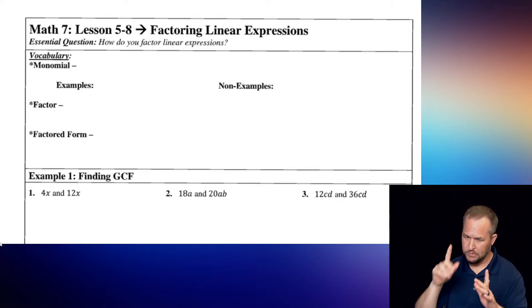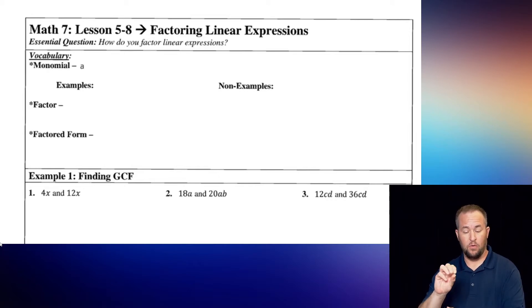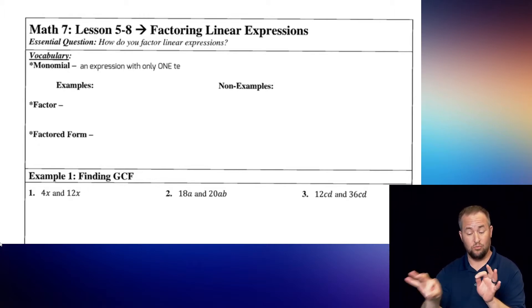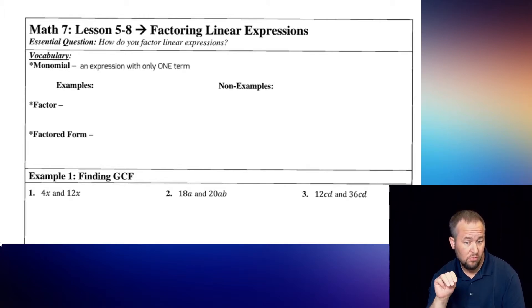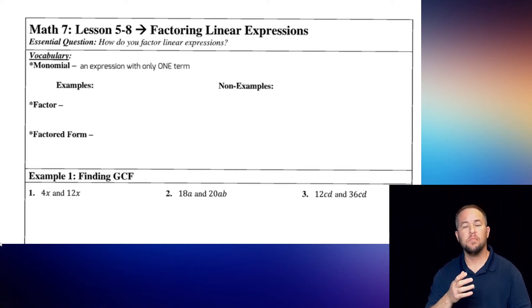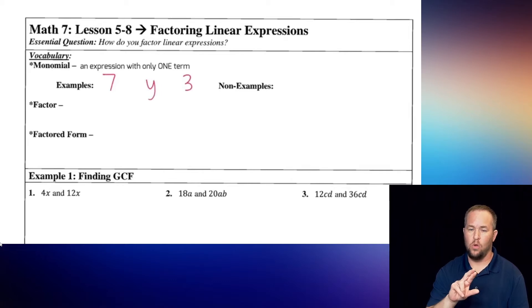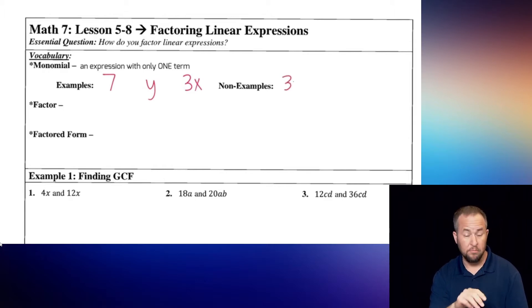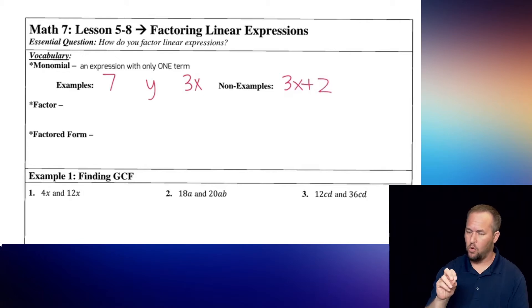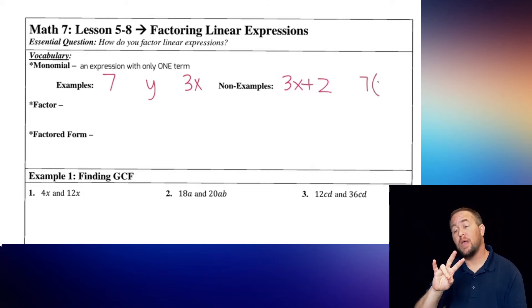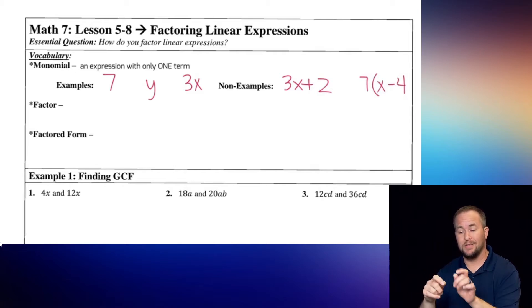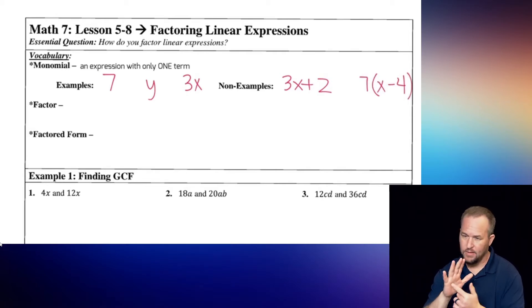The first vocabulary word is a monomial. Mono means one, which is an expression with only one term. Some examples would be 7, or Y, or 3X — those are all monomials, there's just one term. Non-examples would be 3X plus 2, or 7 parentheses X minus 4. Those are non-examples of monomials.